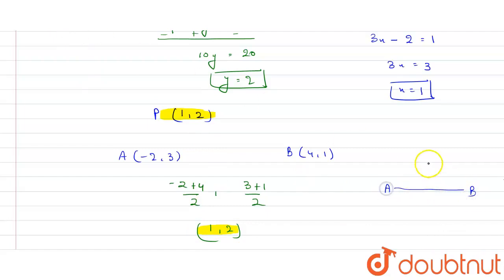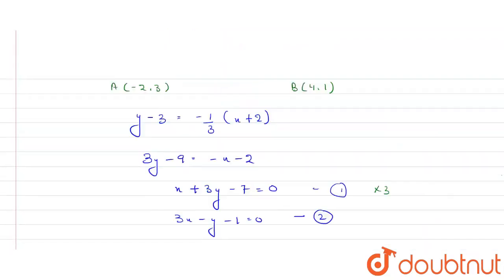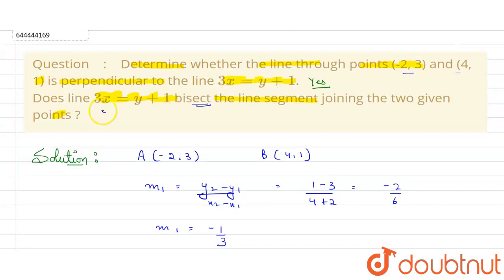The midpoint is ((-2+4)/2, (3+1)/2) = (2/2, 4/2) = (1, 2). The point of intersection of the two lines is (1, 2) and the midpoint of AB is also (1, 2). So yes, the line 3x = y + 1 bisects the line segment joining the two points.